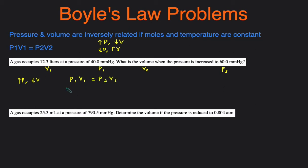So P1 was 40.0 millimeters of mercury. I recommend writing the units out because you have to make sure the units on both sides cancel out. V1 is the initial volume of 12.3 liters. P2 was 60.0 millimeters of mercury and then V2 is what we're trying to solve for.